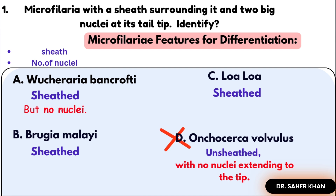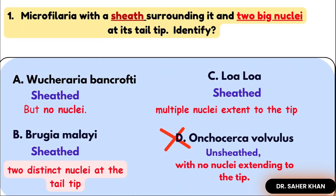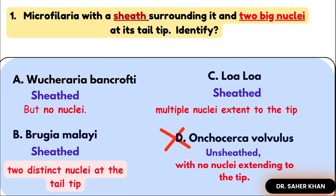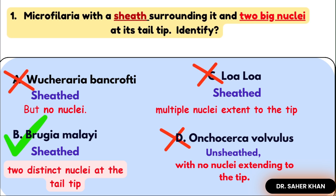Number two, Brugia Malayi — it has a sheath with two large nuclei at the tail, which is exactly what the question describes. Number three, Loa Loa — it has a sheath but multiple nuclei at the tail. The question clearly mentions a sheath with two nuclei at the tail, so the answer is Brugia Malayi.